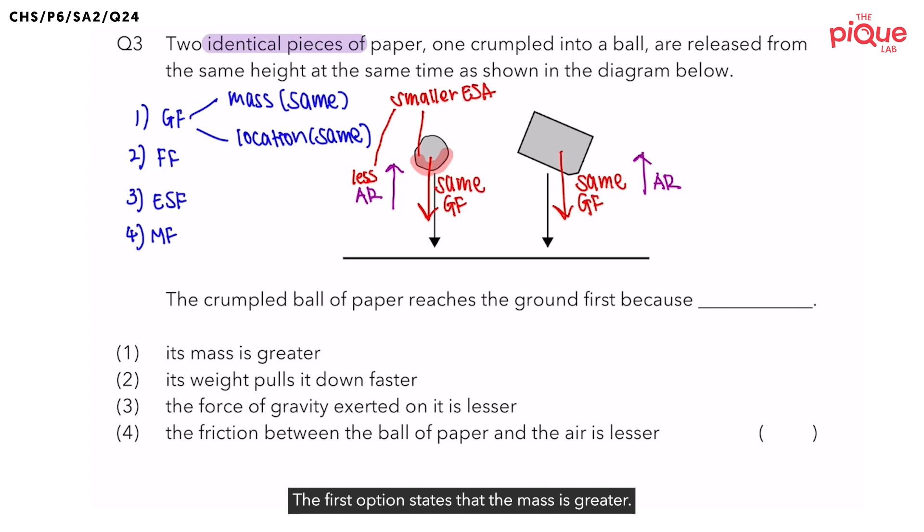The first option states that the mass is greater. As we have mentioned, the pieces of paper are identical, which means that the mass of the paper is the same. The next option states that the weight pulls it down faster, which suggests that more weight is acting on the crumpled ball of paper. Weight is referring to gravitational force. You'll recall that we said that gravitational force acting on both pieces of paper is the same, as their mass is also the same. Hence, the weight will pull it down at the same rate.